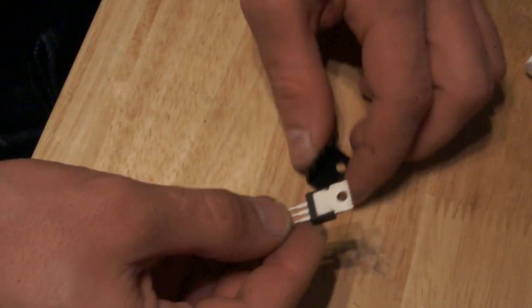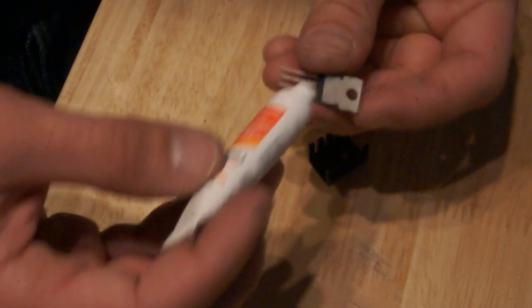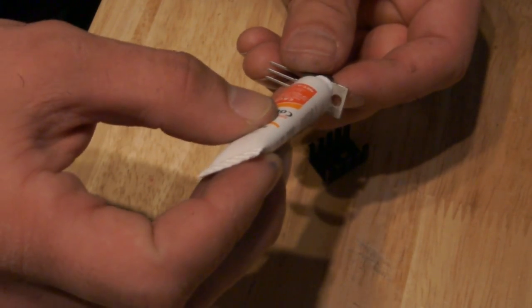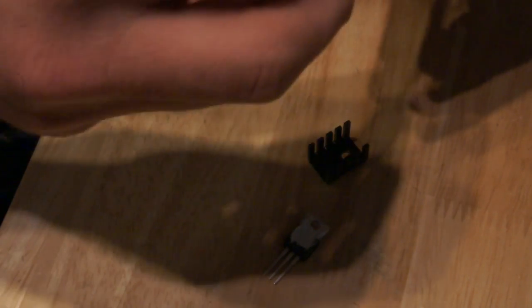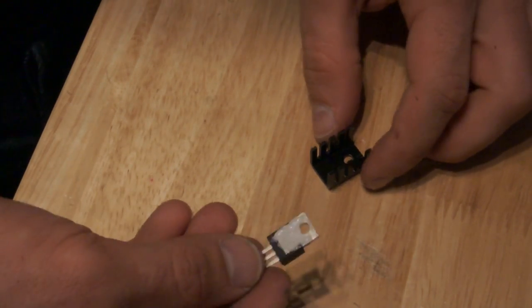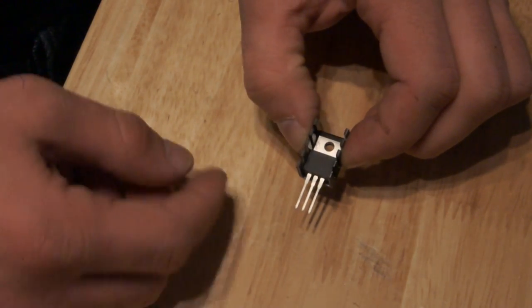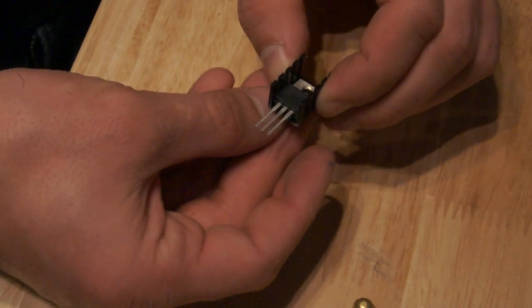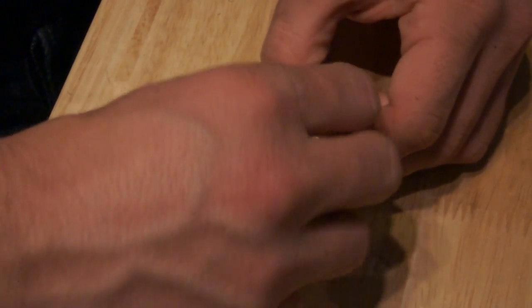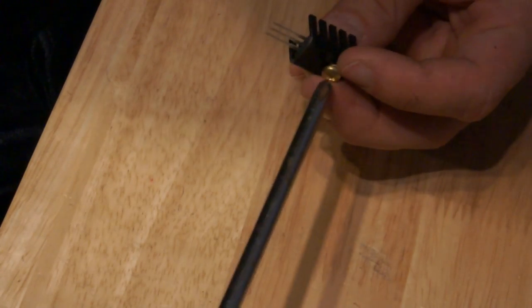Now we'll take our voltage regulator and put a little dab of silicone based heat sink compound on the back side, the metal side. We're going to put that in the channel of the heat sink and line up the holes. On the back side, I'll take my 1 1/4 inch brass screw, feed it through. On the front side, the brass acorn nut. And then with the screwdriver, I'll tighten it on.